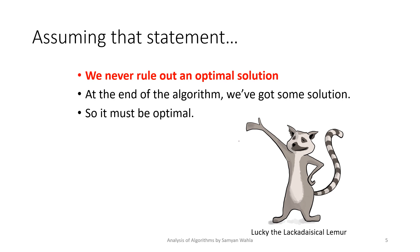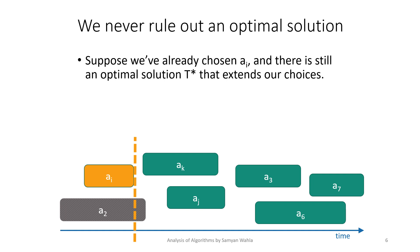Suppose we select an activity ai, and there is still an optimal solution T* that extends our choice. This means ai is the activity you have chosen, and after that, the rest of the problem can be solved from here. That solution is aj, a3, and a7.